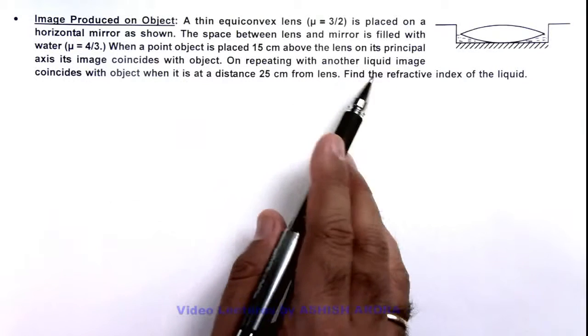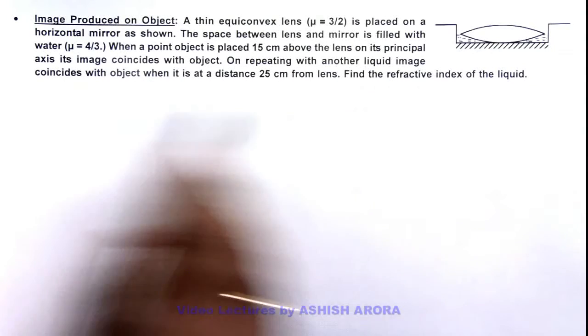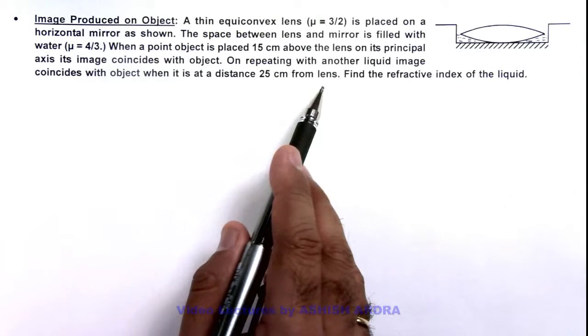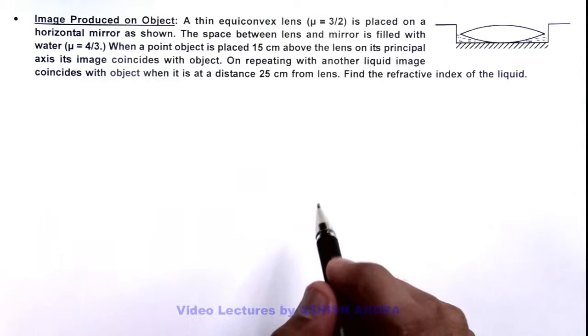And on repeating with another liquid instead of water, image coincides with object when it is at a distance 25 centimeter from the lens. So we are required to find the refractive index of the liquid.